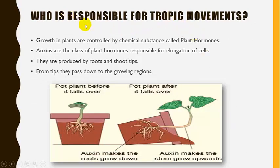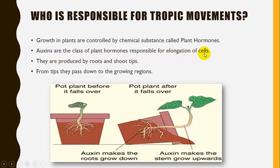Now, the question arises: who is responsible for tropic movements? Studies show that growth in plants is controlled by chemical substances called plant hormones. Auxins are the class of plant hormones responsible for the elongation of cells. They are produced by roots and shoot tips, and from these tips they pass down to the growing regions.